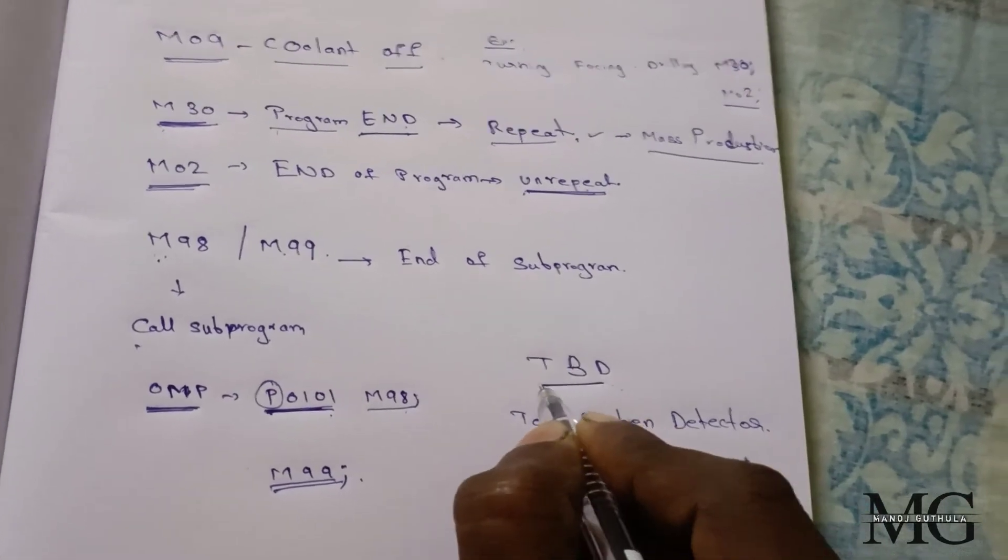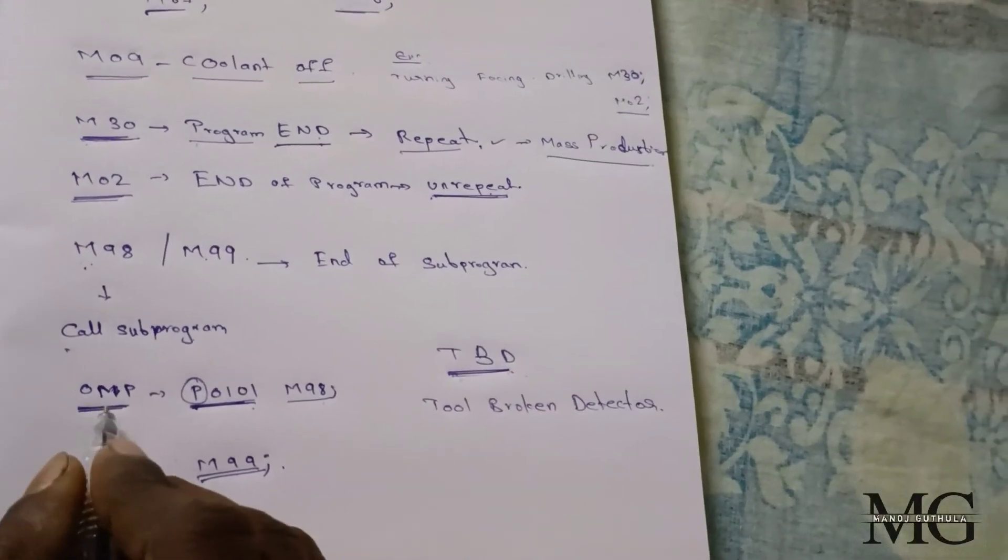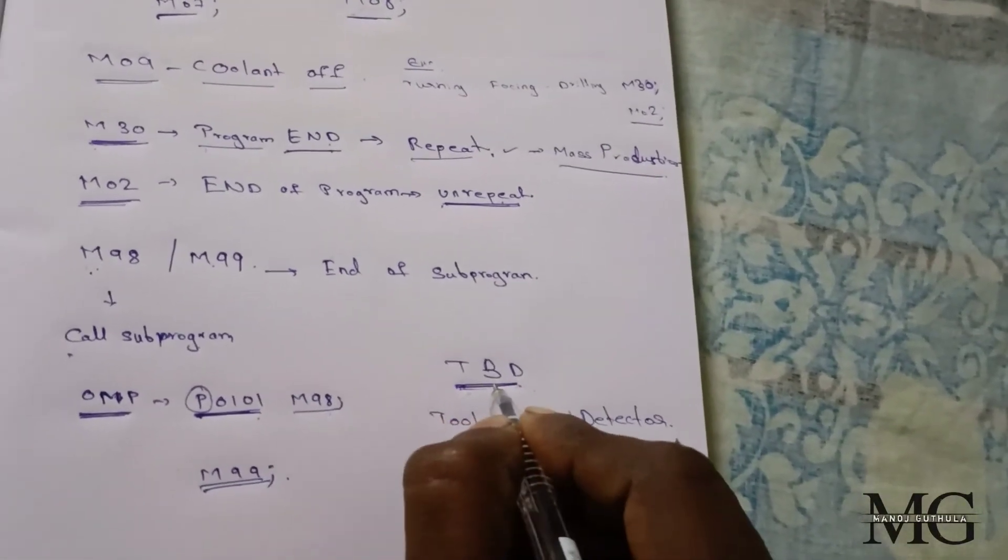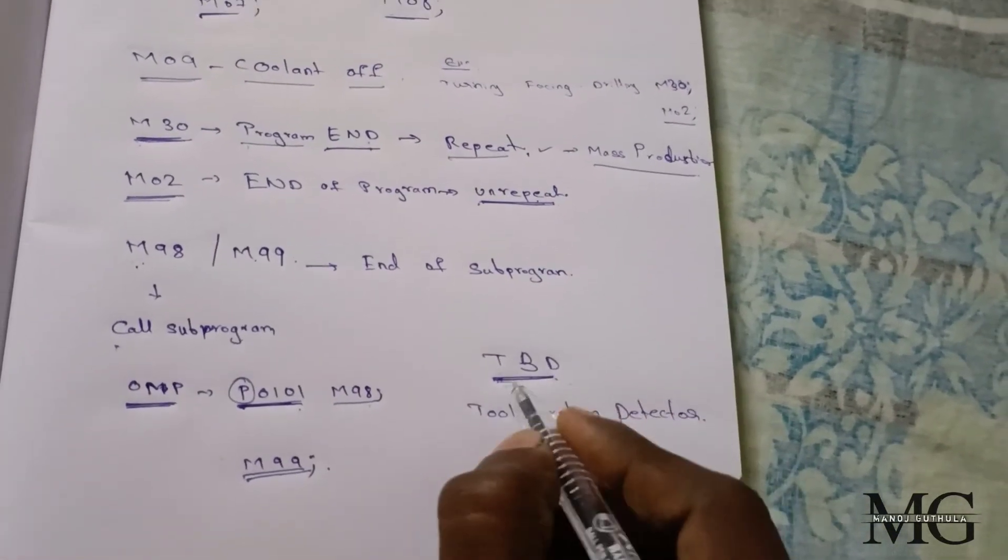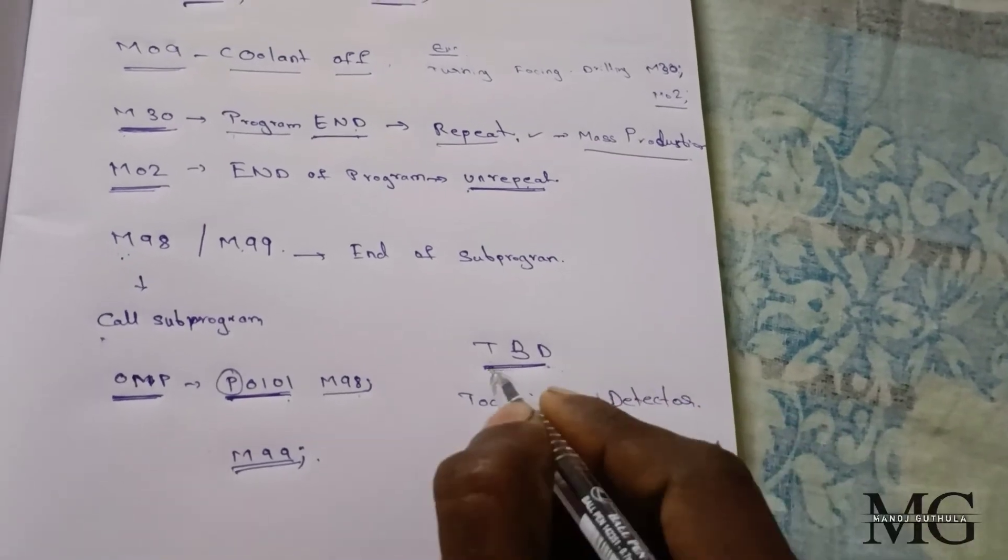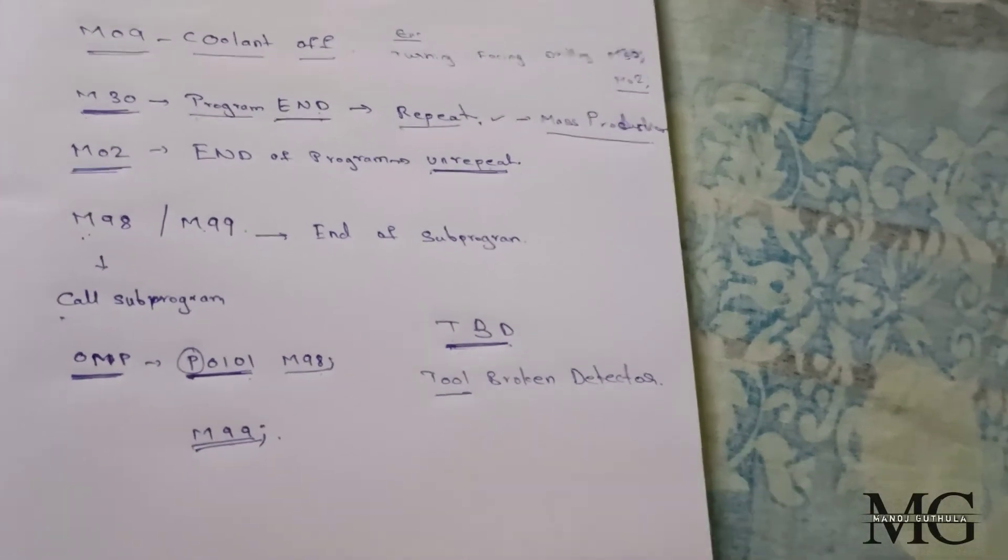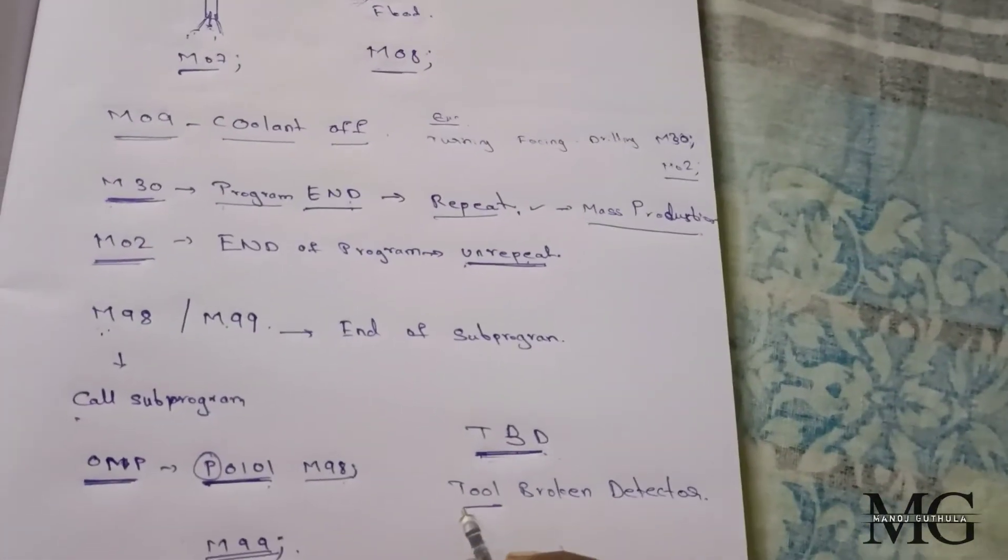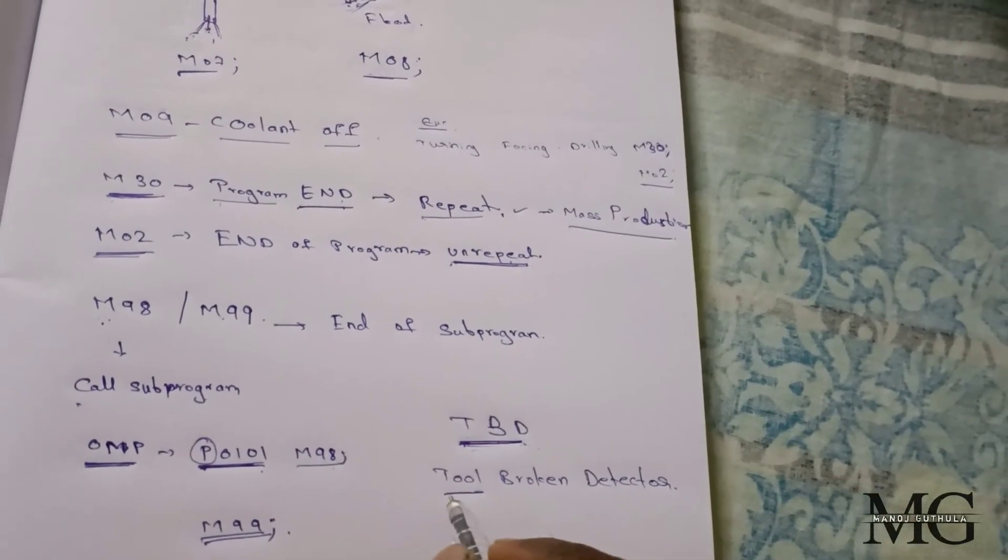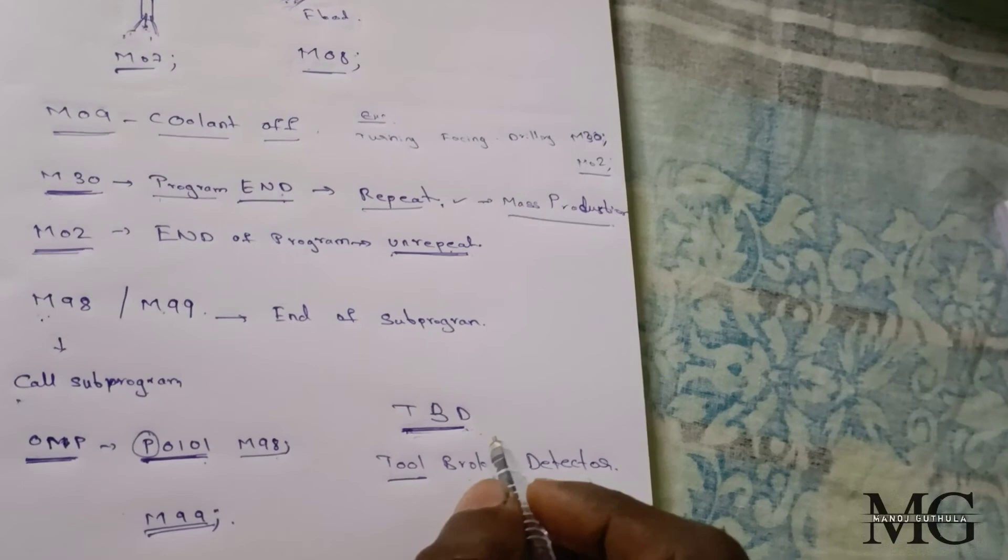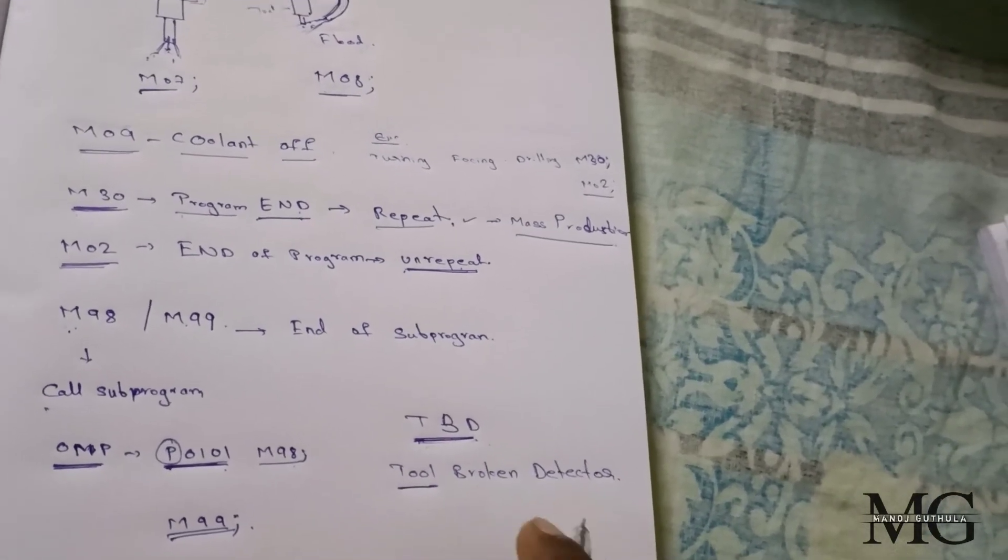We use TBDs and OMPs in milling. Because when the life has been completed of the tool, sometimes in the middle of the life, the tool can be broke. Then when we use TBD programs, TBDs have tool broken detectors. When we use these detectors, this program has been kept in sub-programs.